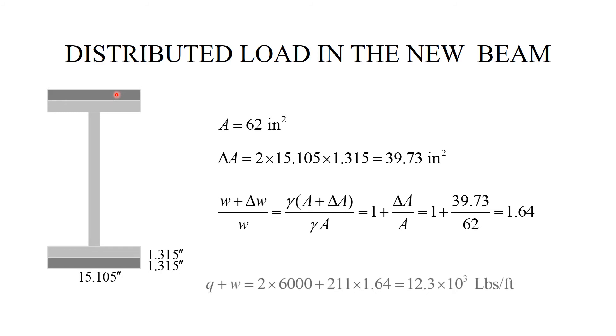Now, we can calculate what's the new distributed load. It's the service load that has been doubled from the original 6,000 plus 211, the original weight per unit length times 1.64. And this gives us 12.3 times 10 to the 3 pounds per foot.